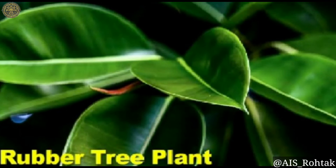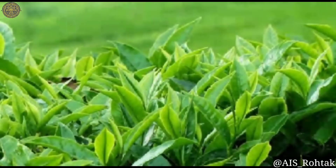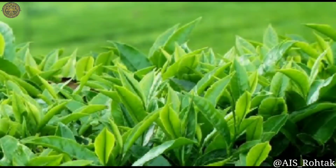Plants also give us rubber. This is a rubber tree plant. Plants give us rubber, gum and paper. And these are tea plants. We also get tea or coffee from plants. Coffee is made from the seeds of the coffee plant. Tea is prepared from the leaves of the tea plant.